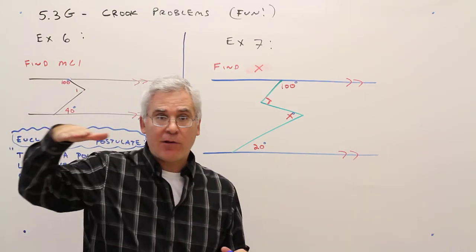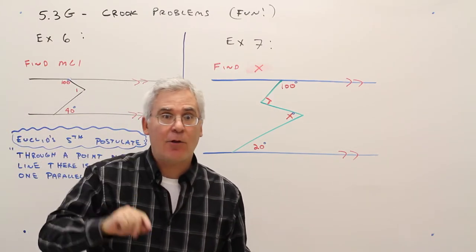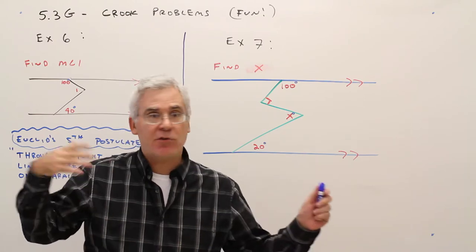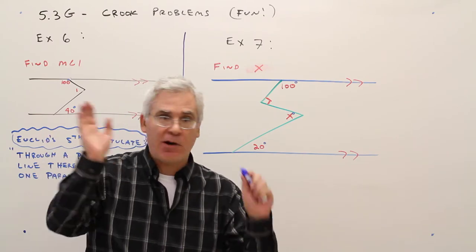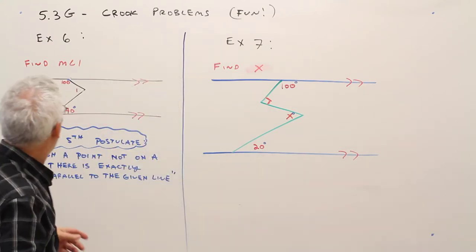So we will be allowed to draw an auxiliary line and state that it is parallel, and it is the only one. Mathematicians argued for centuries over this. Some tried to prove it, just they died not being able to do it.